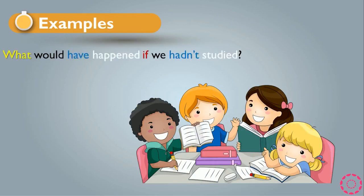Another example: 'What would have happened if we hadn't studied?' This is about asking questions in third conditional. We have a WH question, would have happened — which is the past perfect — and if we hadn't studied — which is the past perfect — and a question mark at the end. This is the question form of the third conditional.